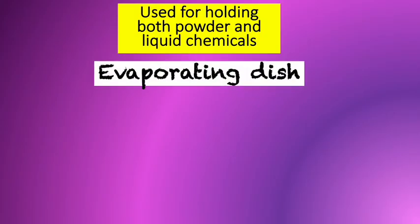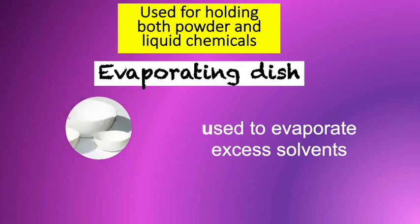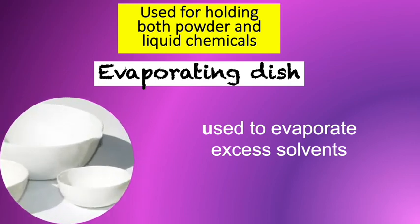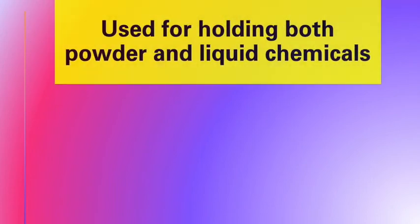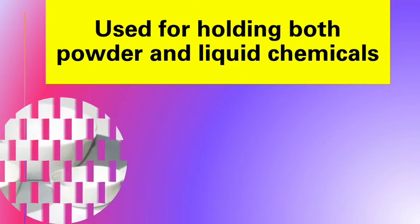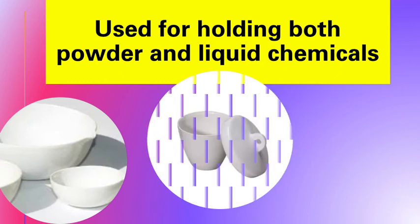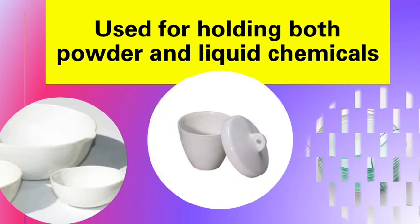The next one is evaporating dish. It is used to evaporate excess solvents. Here's a picture of an evaporating dish. Again, the laboratory tools used for holding both powder and liquid chemicals are: evaporating dish, crucible and cover, and watch glass.